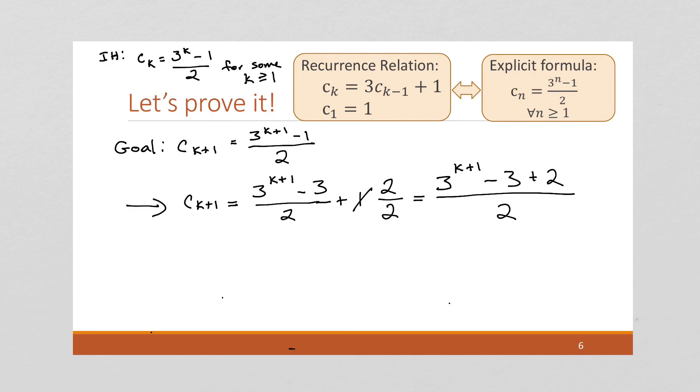I simplify this and I'm going to have 3 to the k plus 1 minus 1 all over 2, which is exactly what was to be shown. Right? As we can see with our goal here, this is exactly what we were trying to show. So we have just proven that our solution for the recurrence relation is correct.